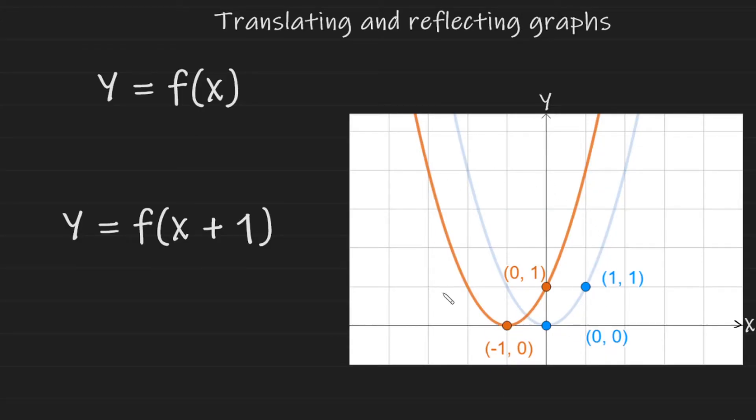The graph has moved in the opposite direction to what we would expect. So we can conclude from this that translations to the inside of the function, so inside this bracket, work in the opposite way.